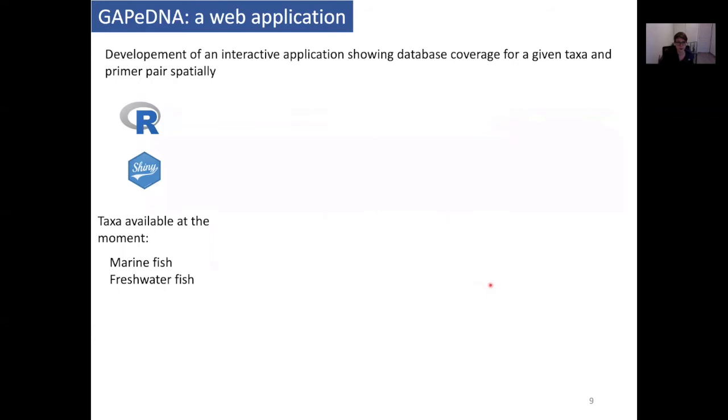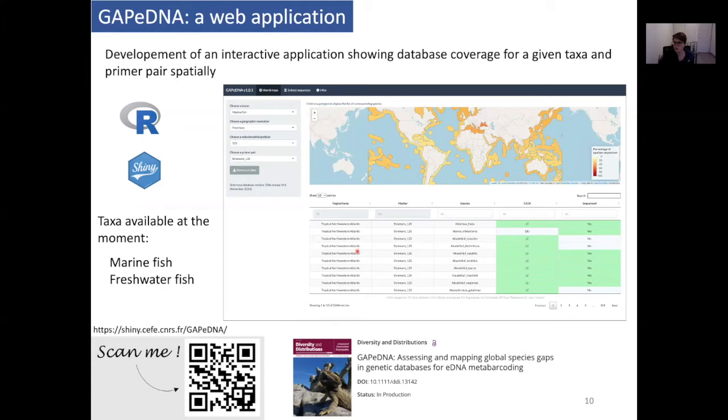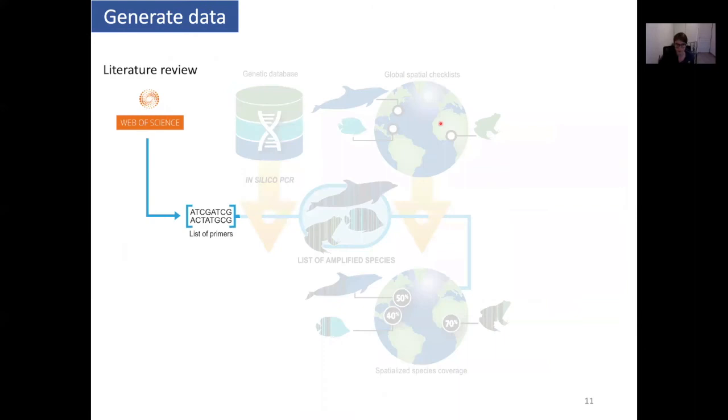For this, I developed a web application called GAPiDNA. It's coded in R using the package Shiny, and it's showing database coverage for a given taxa and primer pair. For the moment, there are only marine fish and freshwater fish taxa available. It's accessible on the link here. You can also take a picture of the QR code with your camera and it takes you right to the website. This work is part of a paper that will be published soon.